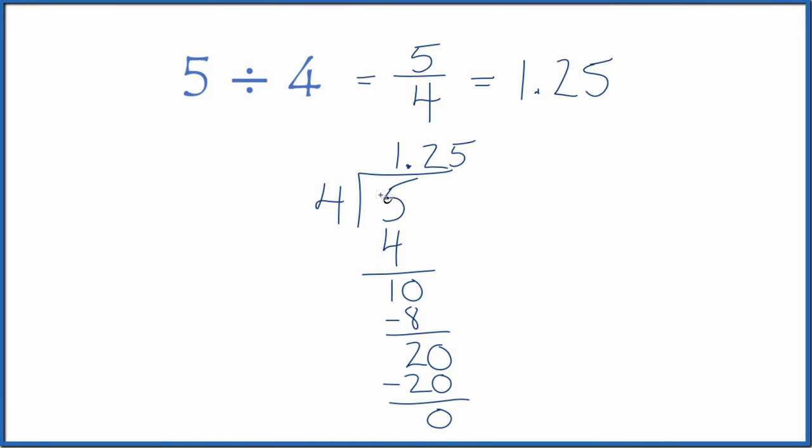So 5 divided by 4, if you do it longhand, is 1.25. That's just what we found before. This is Dr. B dividing 5 by 4. It's either the fraction 5 fourths or 1.25.